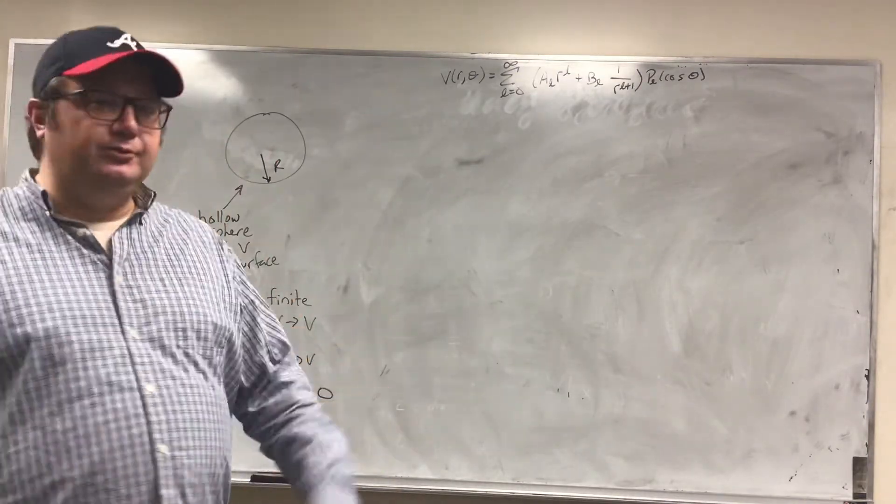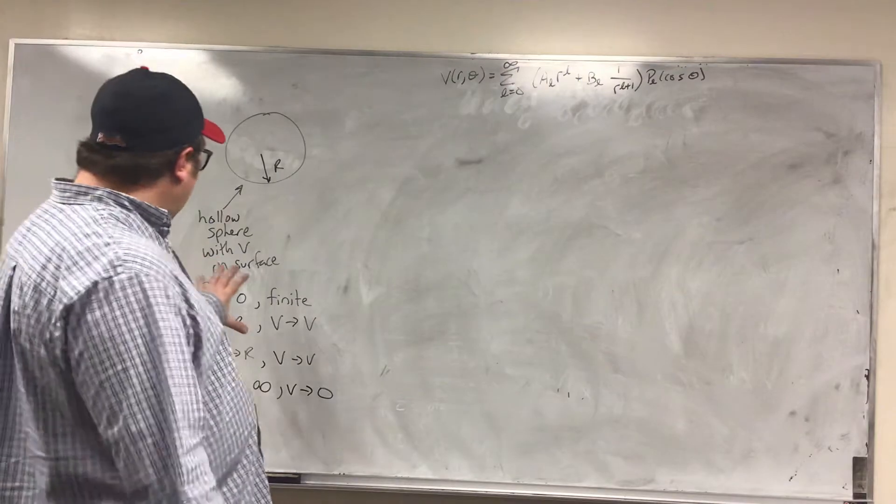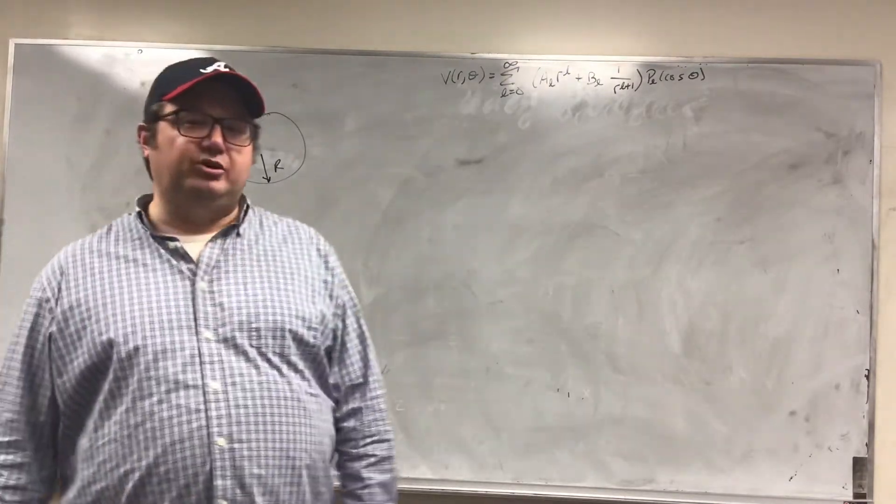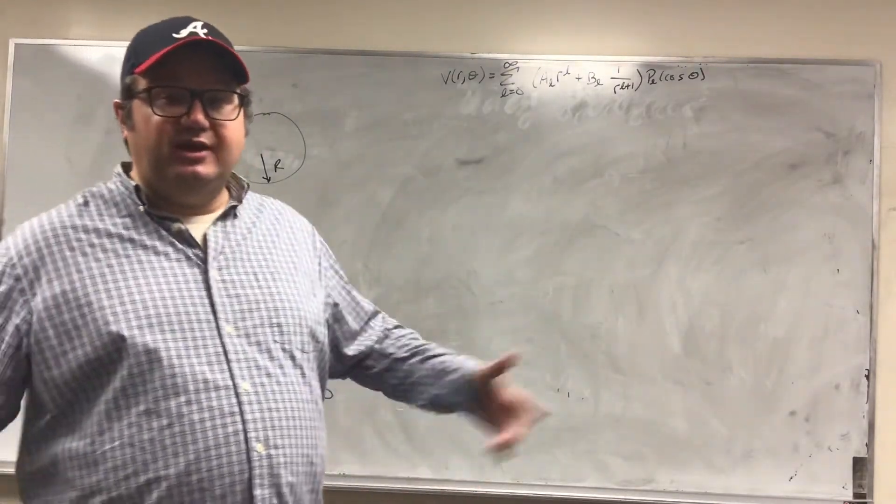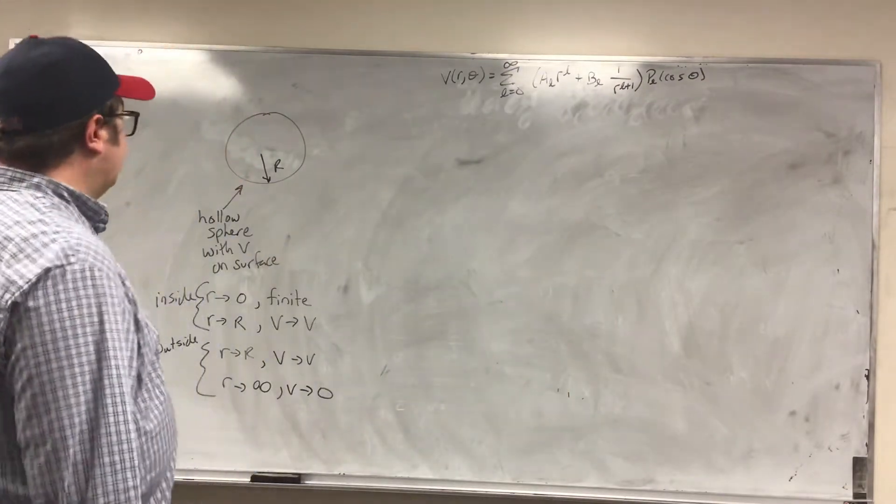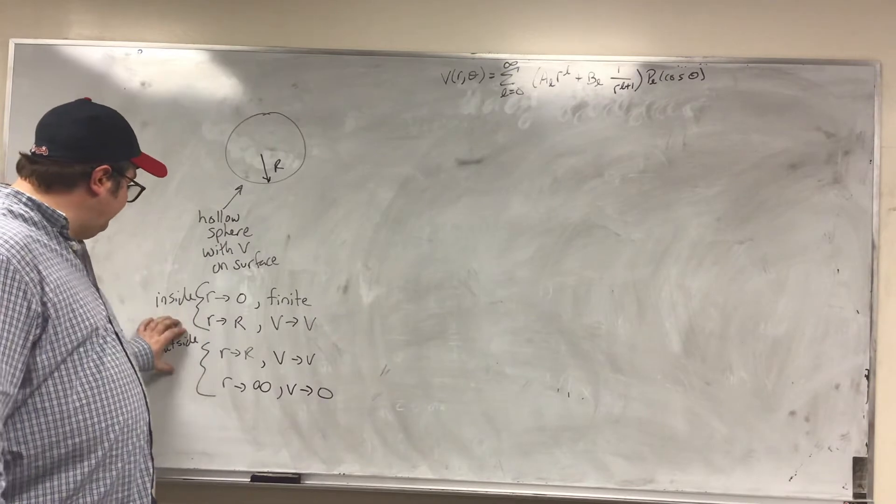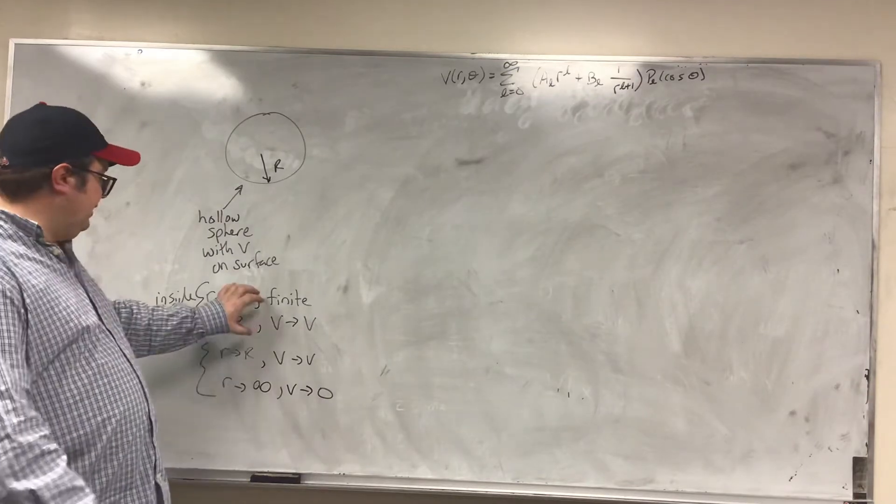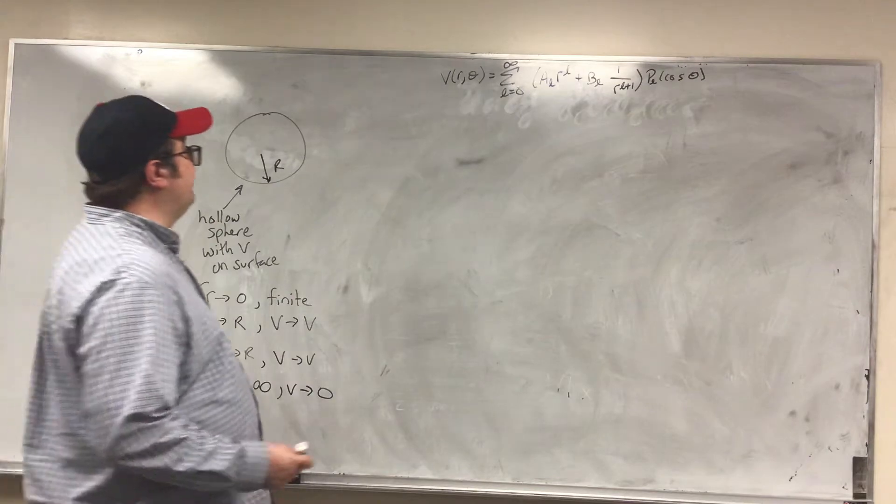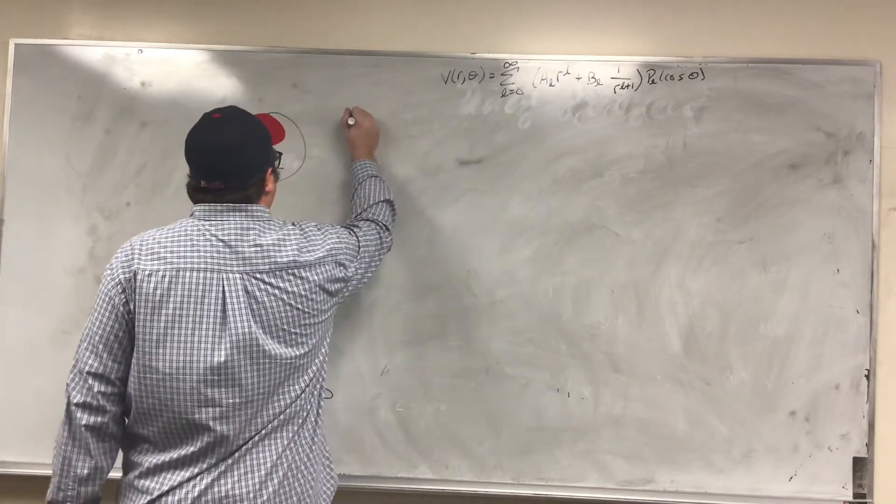So what I want to do is take these boundary conditions and apply it to my solution, and that will tell me what the potential is everywhere. We're going to have two equations, one for inside and one for outside, because I have two boundary conditions inside and two boundary conditions outside. Let's start with the inside first.